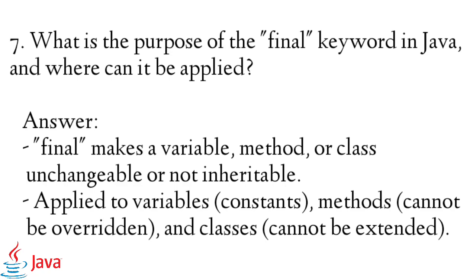Question 7: What is the purpose of the final keyword in Java, and where can it be applied? Answer: final makes a variable, method, or class unchangeable or not inheritable. Applied to variables and constants, methods cannot be overridden, and classes cannot be extended.